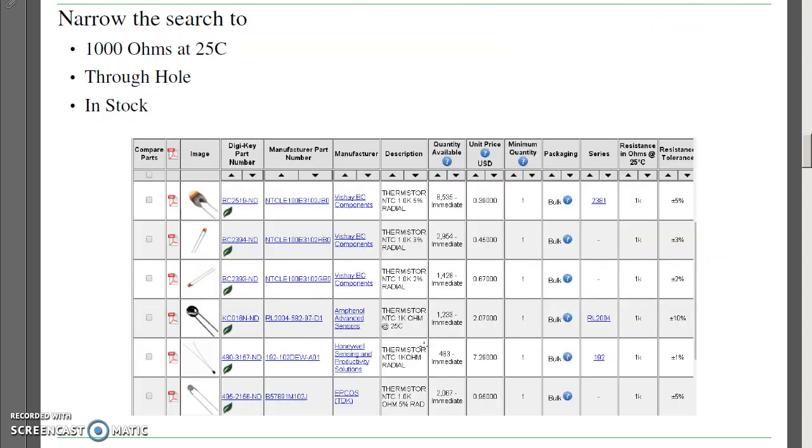What we're going to do is narrow the search by saying I want 1,000 ohms at 25°C, through hole, in stock. And you still have a bunch of choices. Here's somewhat arbitrarily, we're just going to pick this bottom one right here.